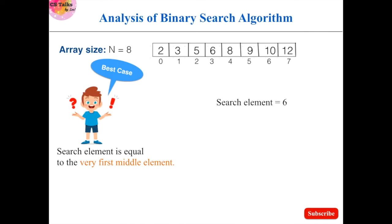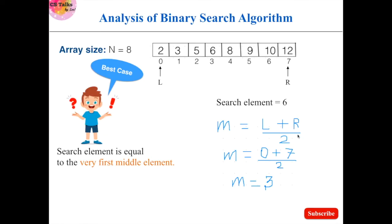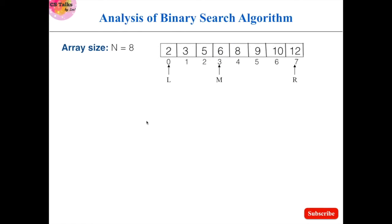Say for example we need to find whether 6 is present in this array. The search element is 6. Initially, the left iterator points to the starting index and the right iterator points to the ending index of the array. We calculate the midpoint using these two iterators: L is 0 and R is 7, so the midpoint is 3. The middle element is 6. The binary search algorithm compares the search element with this middle element — both are equal, the element is found at index 3, and the algorithm returns that index. This is the best case, which is O(1).